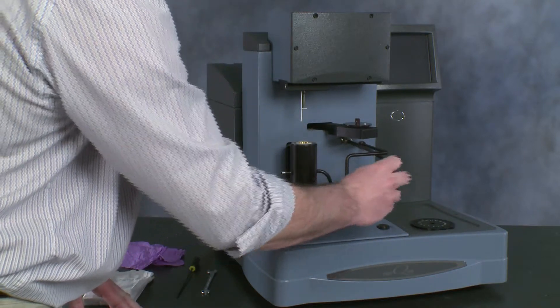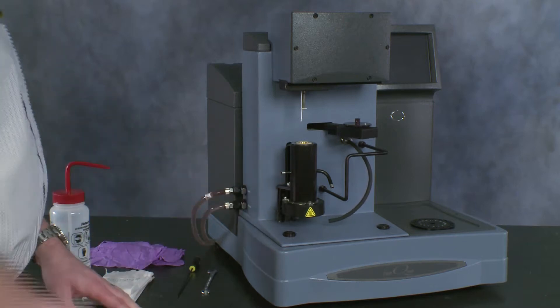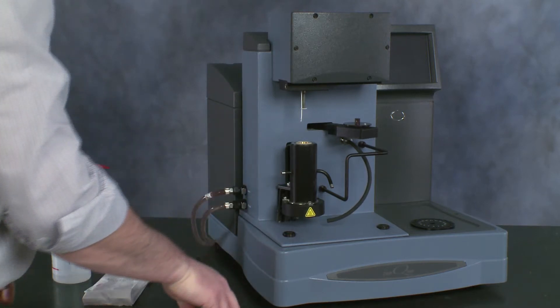We want to remove the purge gas tube so that we can remove the jacket, and then we can start loosening the nuts on the furnace itself.